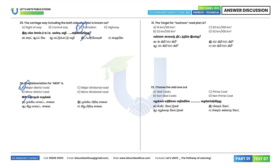31st question: The target for the Lucknow Road Plan, which is the Third 20-Year Plan, is 82 km per 100 km². Option C is the correct answer.